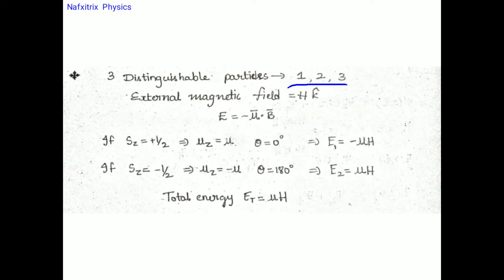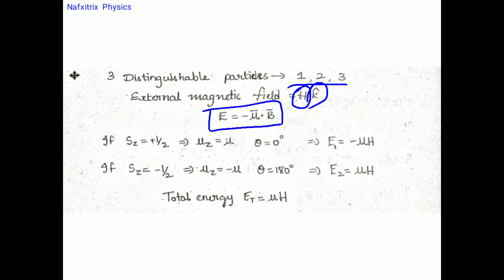Suppose the three distinguishable particles are labeled 1, 2, and 3. They are separate, so we label them differently. If they were indistinguishable, we'd label them all the same. The external magnetic field is H in the z-direction (k-cap). The energy formula is E = −μ·B, based on the alignment of the particle's magnetic moment with respect to the field.